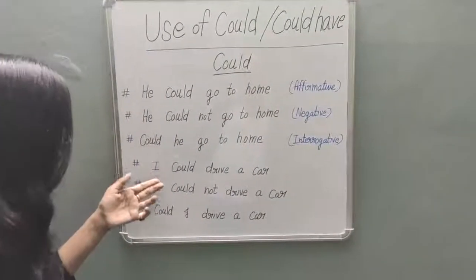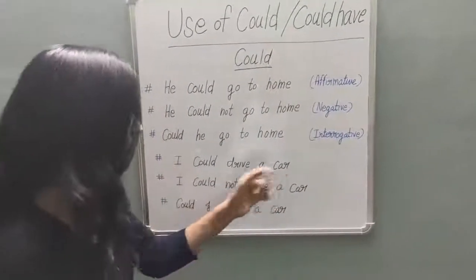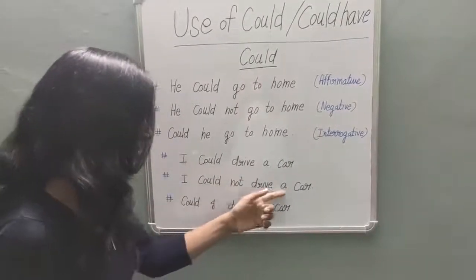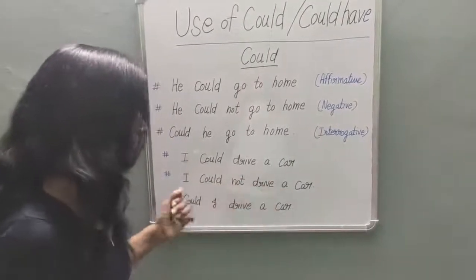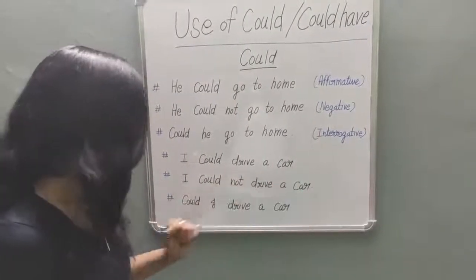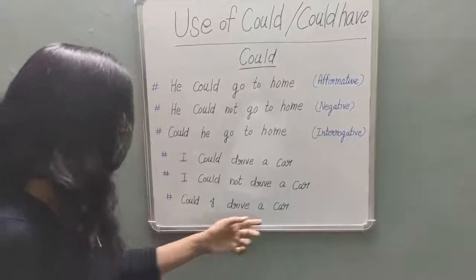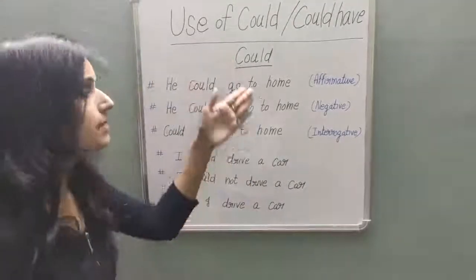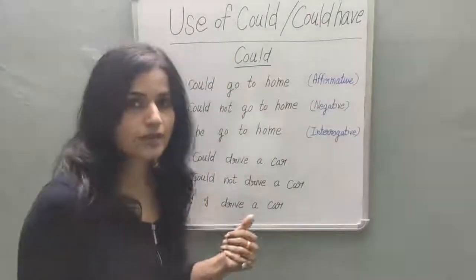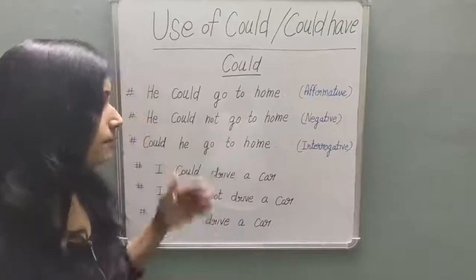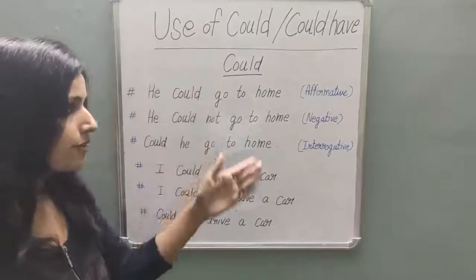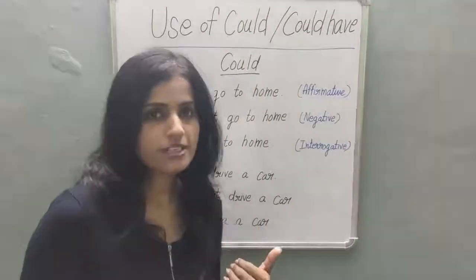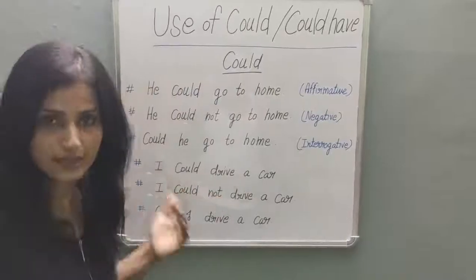Next example: affirmative — 'I could drive a car.' Negative — 'I could not drive a car.' Interrogative — 'Could I drive a car?' So when we make sentences in affirmative, negative, and interrogative with 'could', you can create sentences like these.